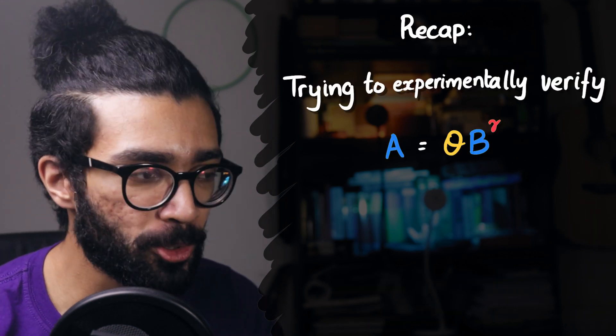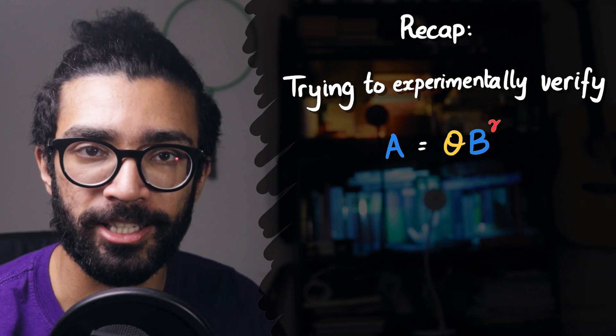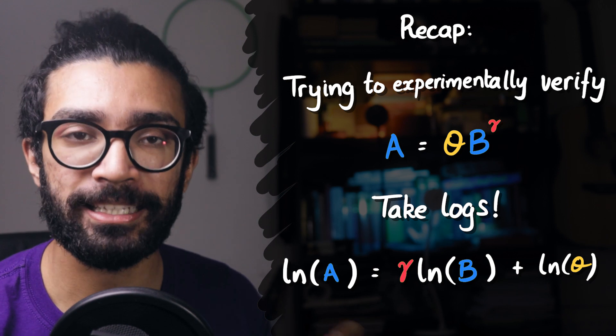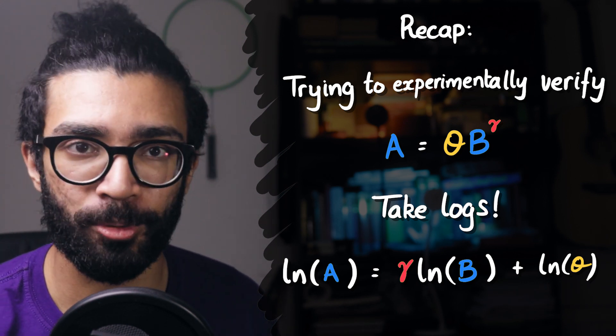So just to recap, if you want to verify some sort of power law relationship, A is proportional to B to some power, then take logarithms because you can easily find the power and the constant of proportionality.